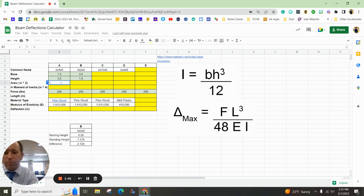And then we have the 2x4 is actually rotated so that the base is 1.5 or 3.5. The area, we can use the formula for area, which is simply you type in equals base times height. When you use the times, you want to use the asterisk or the shift 8 button and then go ahead and hit enter.